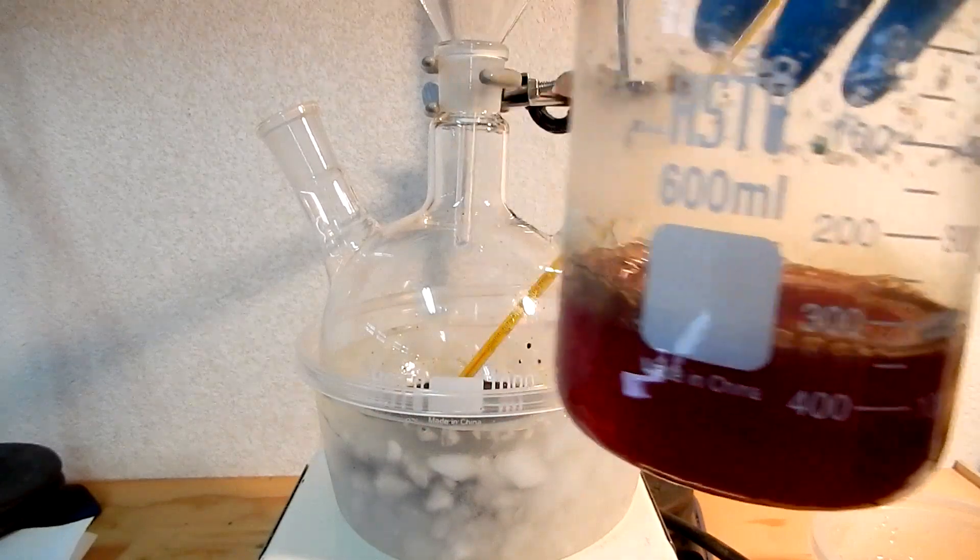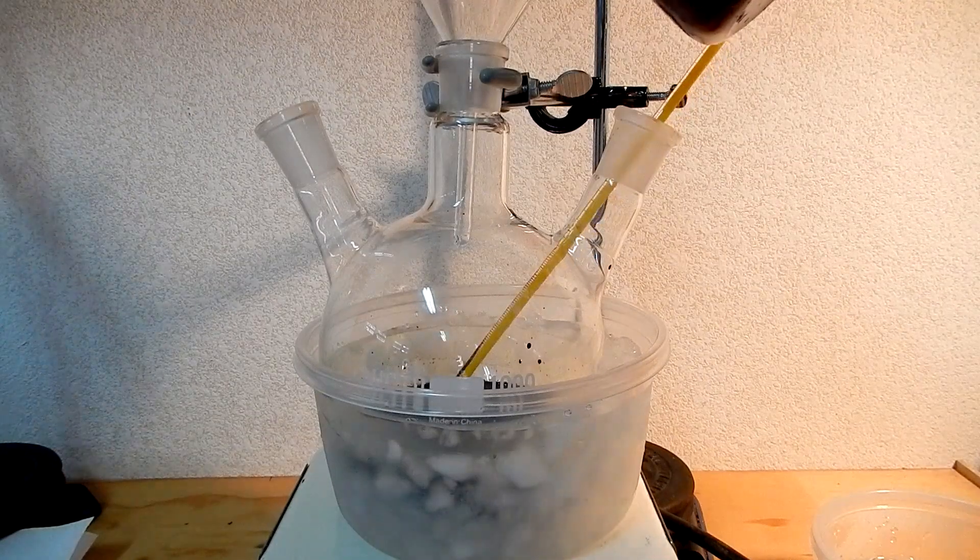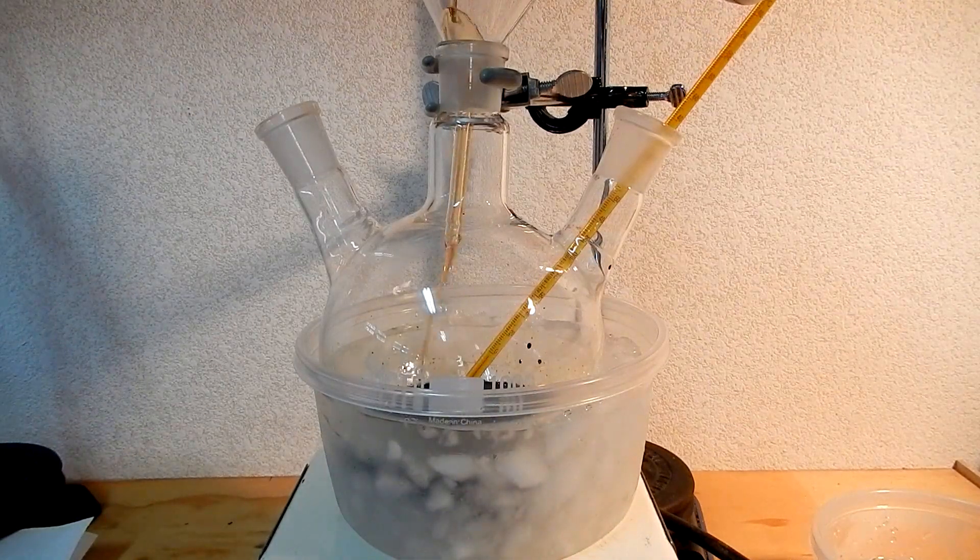Then begin to slowly add the phenyl diazonium chloride solution to the copper 1 chloride solution in small portions. Keep the phenyl diazonium chloride cold between additions.